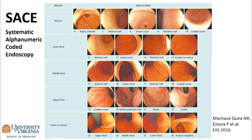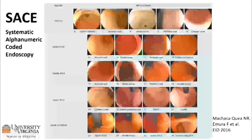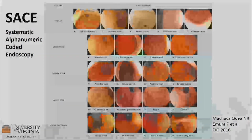Doug presented our friend Fabian's SACE — Systematic Alphanumeric Coded Endoscopy — which is really a recapitulation of the Japanese methodological exam, something important to know. In the U.S., it's hard to convince colleagues to take 26 pictures of the stomach. But really, the pictures are just a surrogate for taking your time and doing a careful exam.